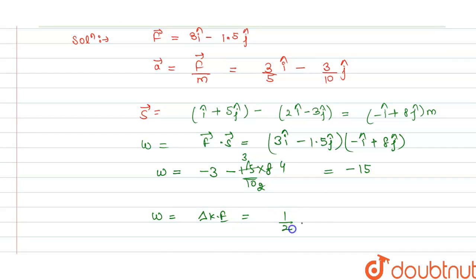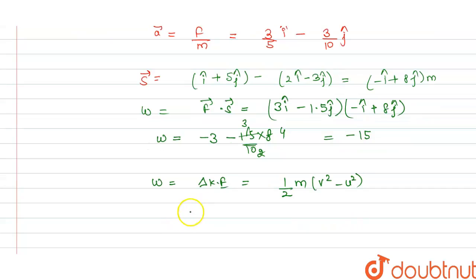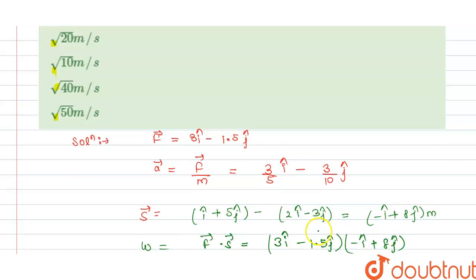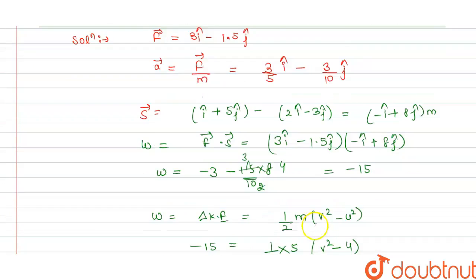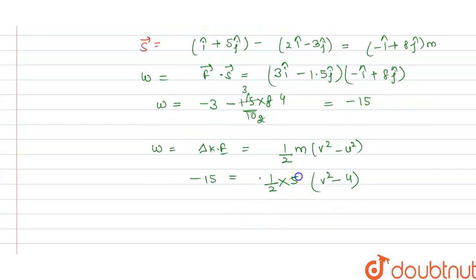And we know that work done is equal to change in kinetic energy, that is delta KE equals half mass times v squared minus u squared. We have to calculate final velocity. Initial velocity is 4 meter per second and mass is 5 kg, given to us in the question.